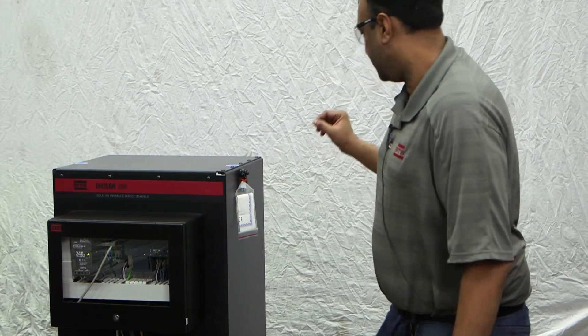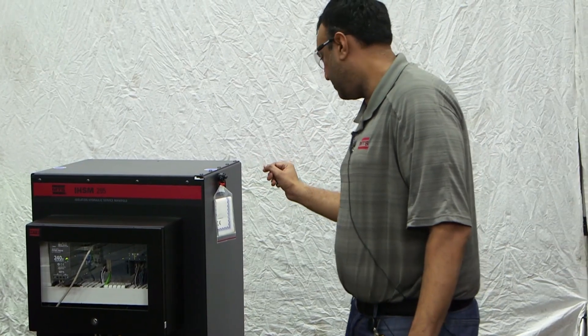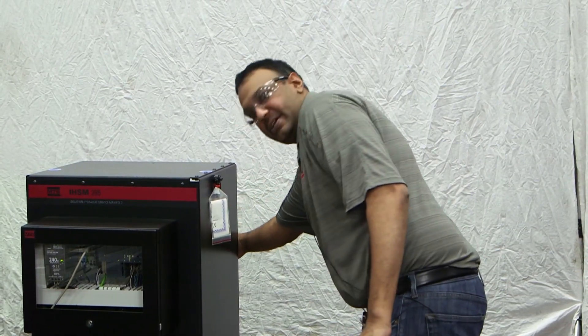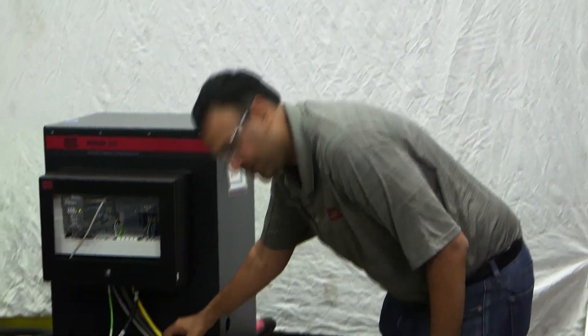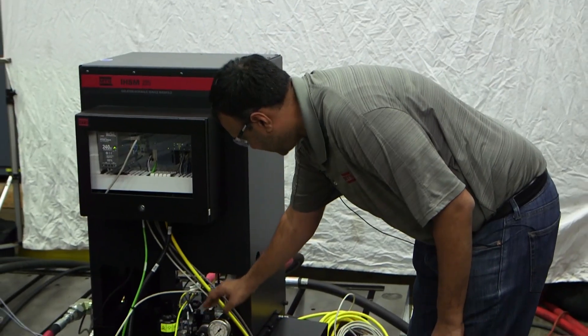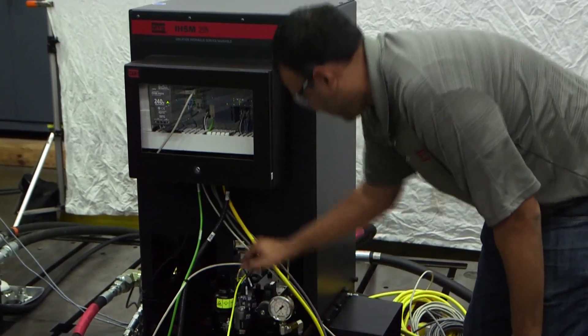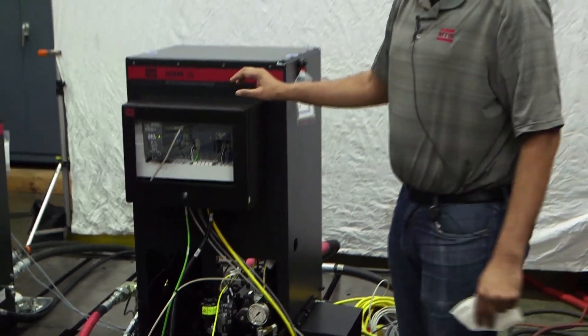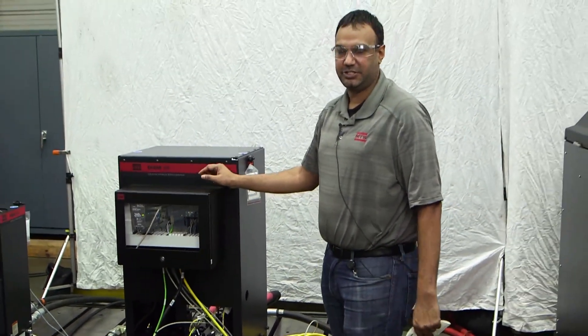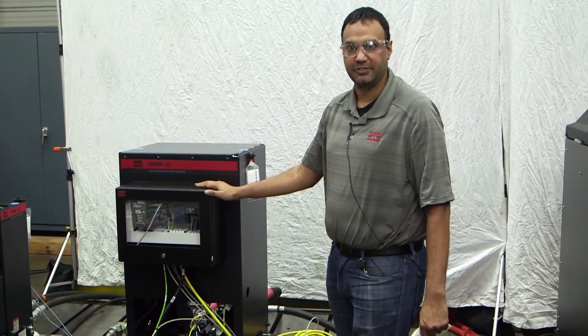The dirty filter and the incoming pressure switch are on the back side. All the valves and the valve feedbacks are right here. The two valves that have feedback, one here and one here, give us the safety rating we need to achieve PLD or PLE for this system.